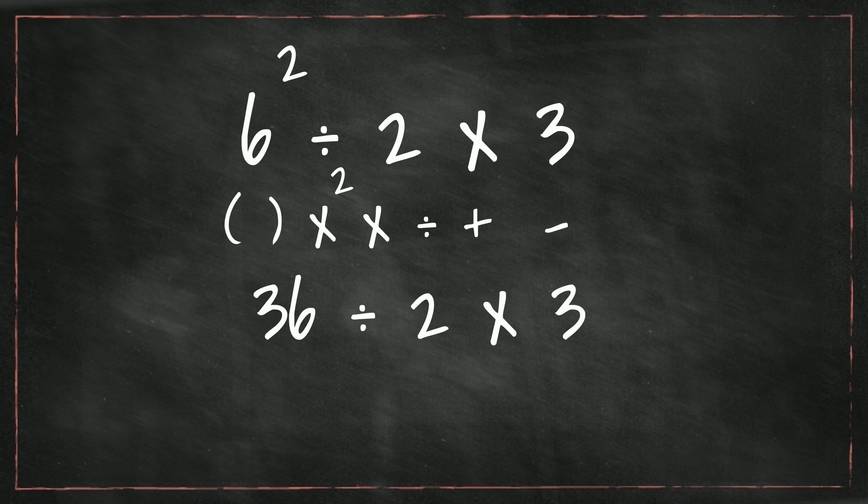So now what is next? Well, with multiplication and division, they are equal. You work the problem from left to right, and it's which one shows up first. So division shows up first.